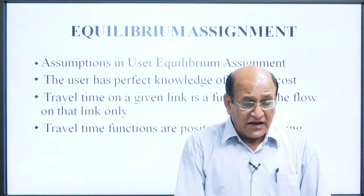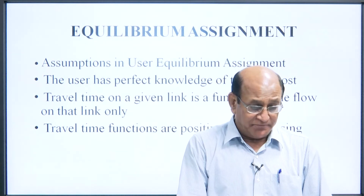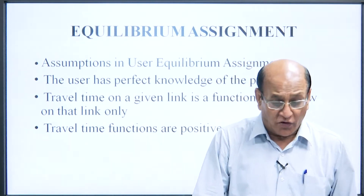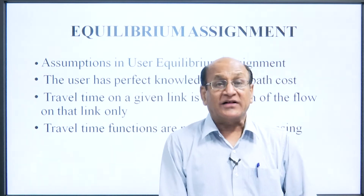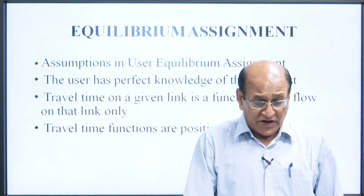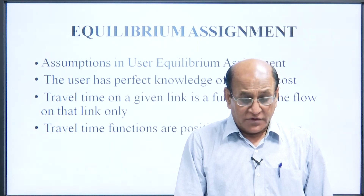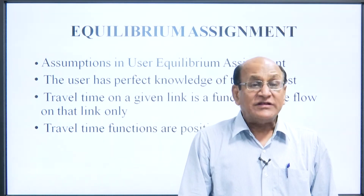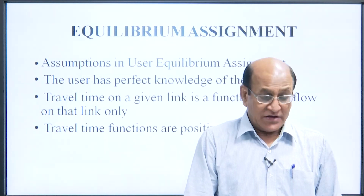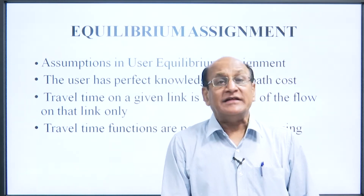Assumptions in user equilibrium assignment: the user has perfect knowledge of path cost; travel time on a given link is a function of the flow on that link only; and travel time function is a function of the flow on path k.